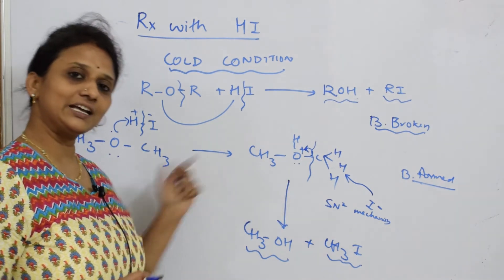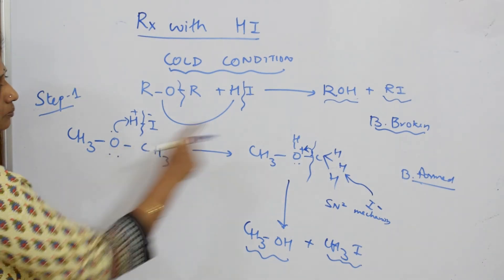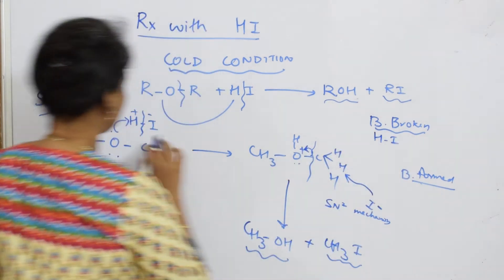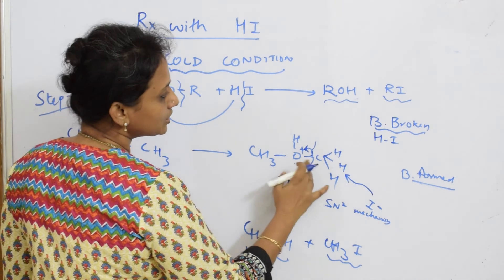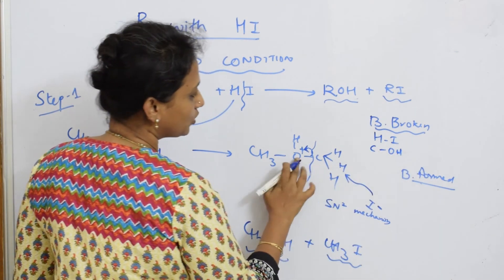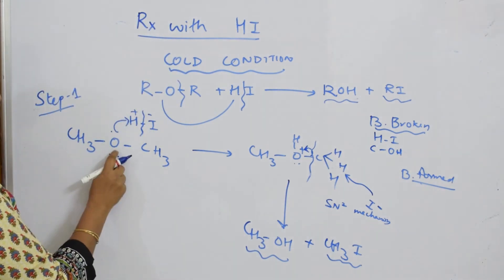You can directly do the mechanism. Just see: first of all, under bonds broken—HI. So the HI bond is broken, correct? After that, come back here. Which bond is broken? The C-O-H bond. The C-O bond has broken. Which bond has formed? The O-H bond has formed, isn't it?